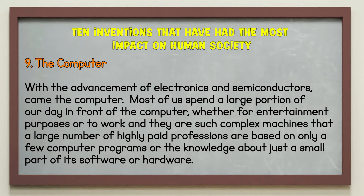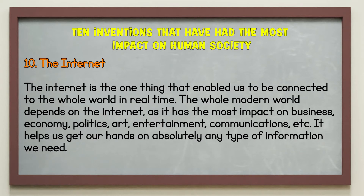Number nine: the computer. With the advancement of electronics and semiconductors came the computer. Most of us spend a large portion of our day in front of a computer, whether for entertainment or work. They are such complex machines that a large number of highly paid professions are based on only a few computer programs or knowledge of just a small part of their software or hardware. Number ten: the internet. The internet enables us to be connected to the whole world in real time. The whole modern world depends on the internet, as it has the most impact on business, economy, politics, art, entertainment, and communications. It helps us get our hands on absolutely any type of information we need.